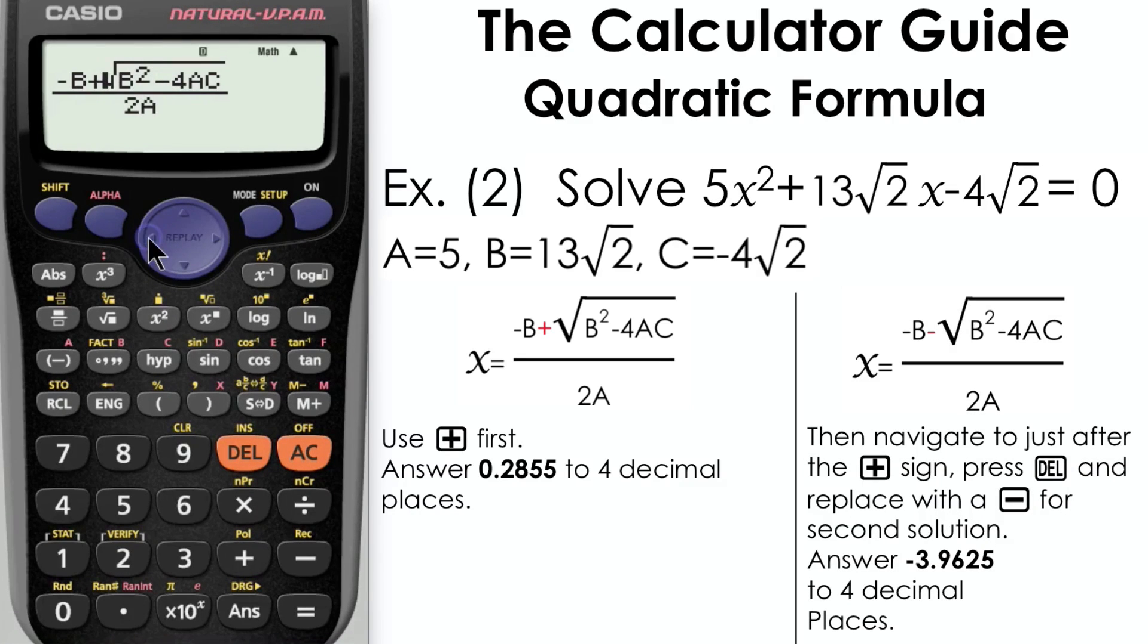Navigate back to delete the plus and change that to a minus, and here we have our second solution: -3.9625. Don't forget to round that to four decimal places.